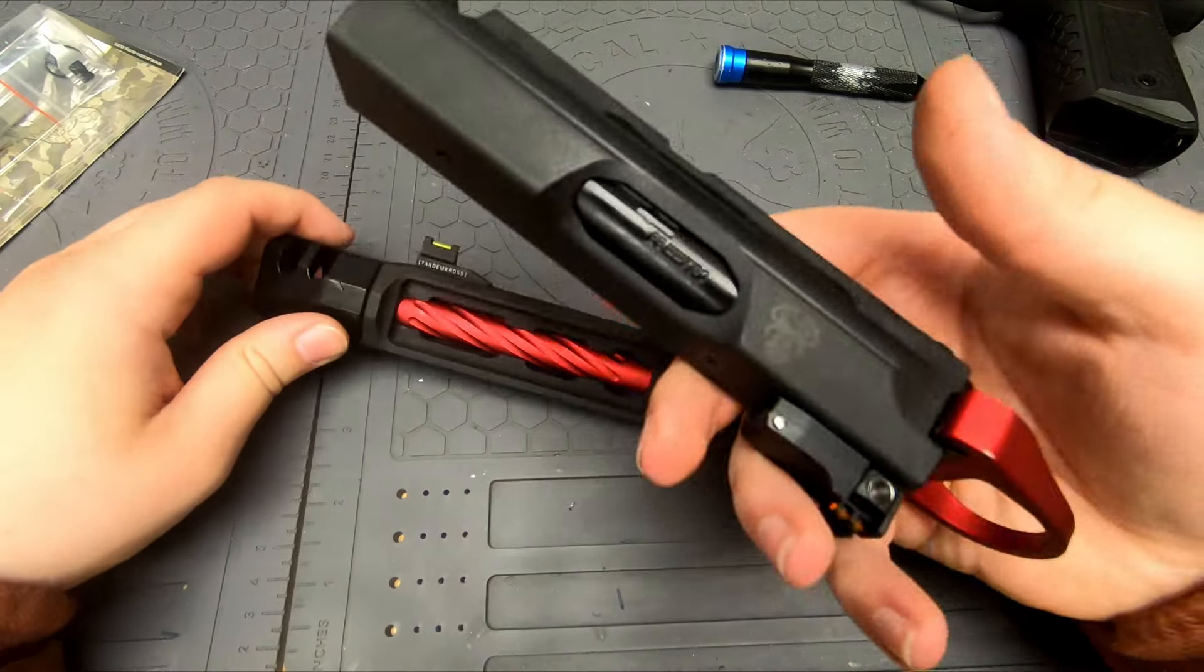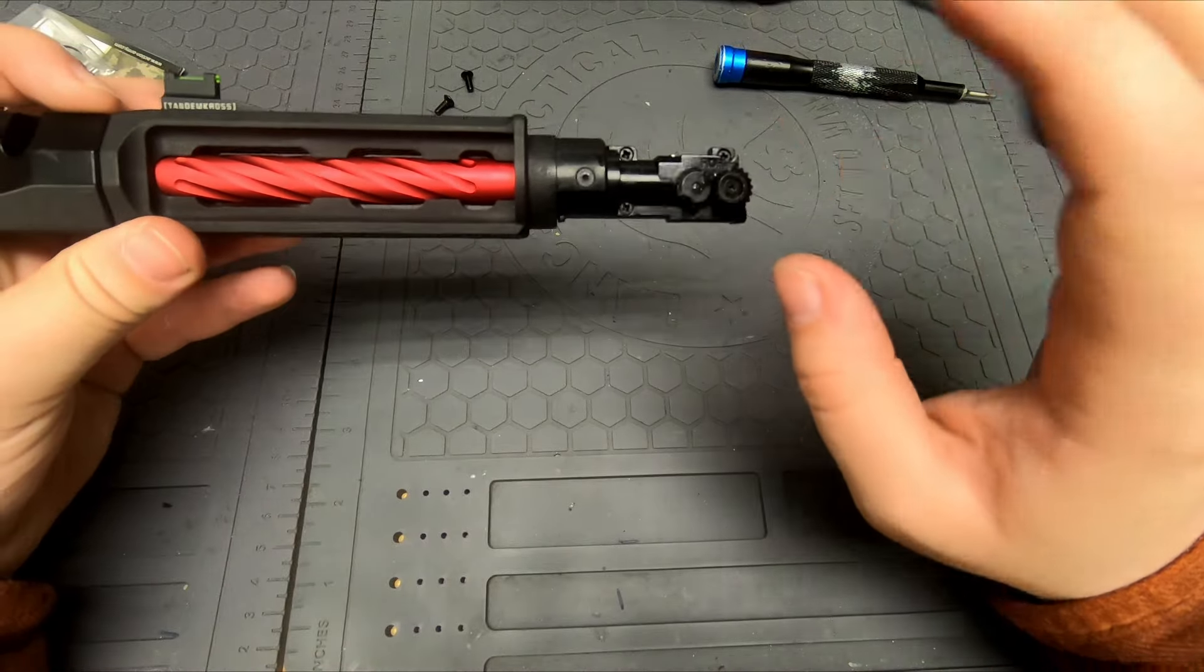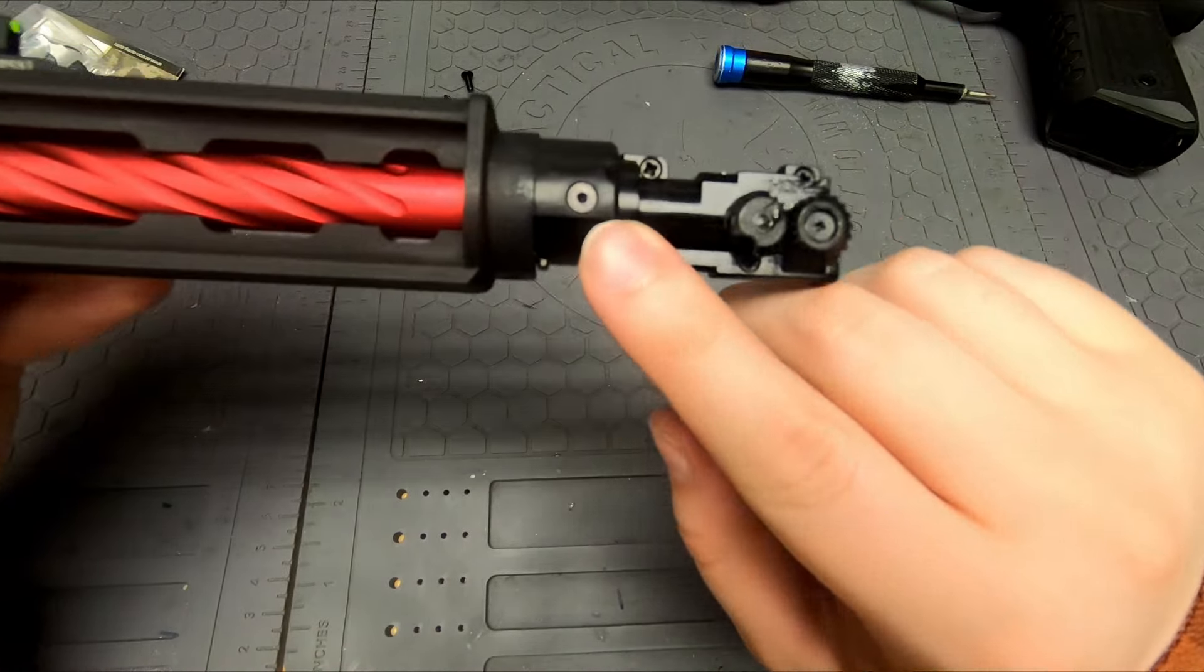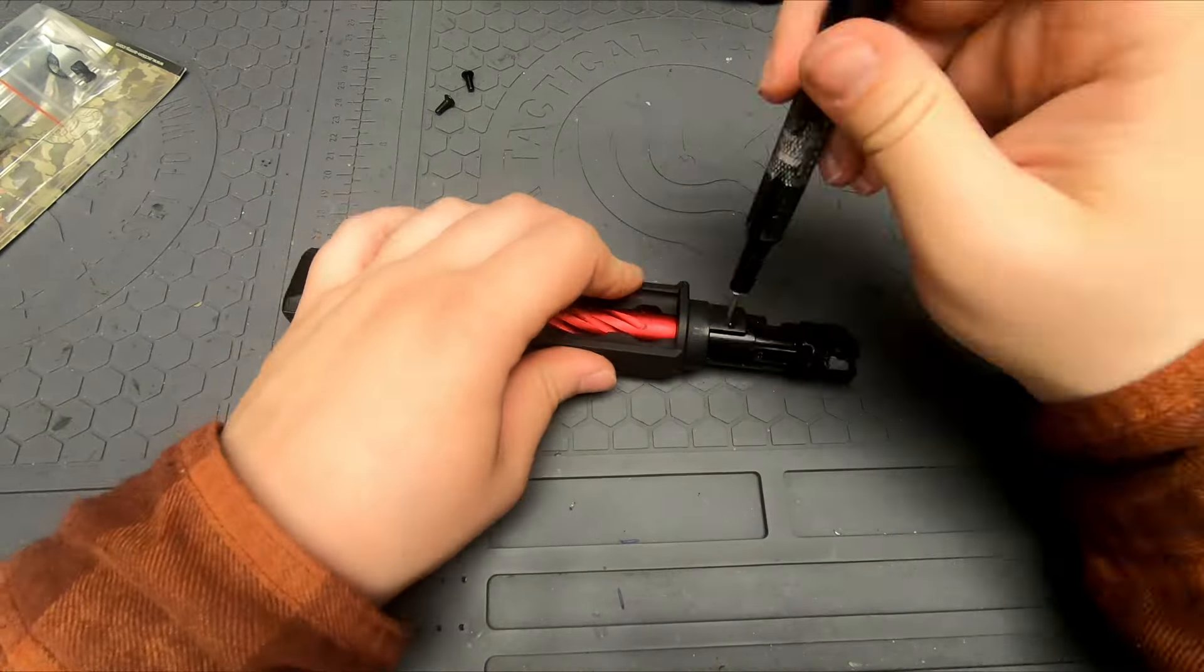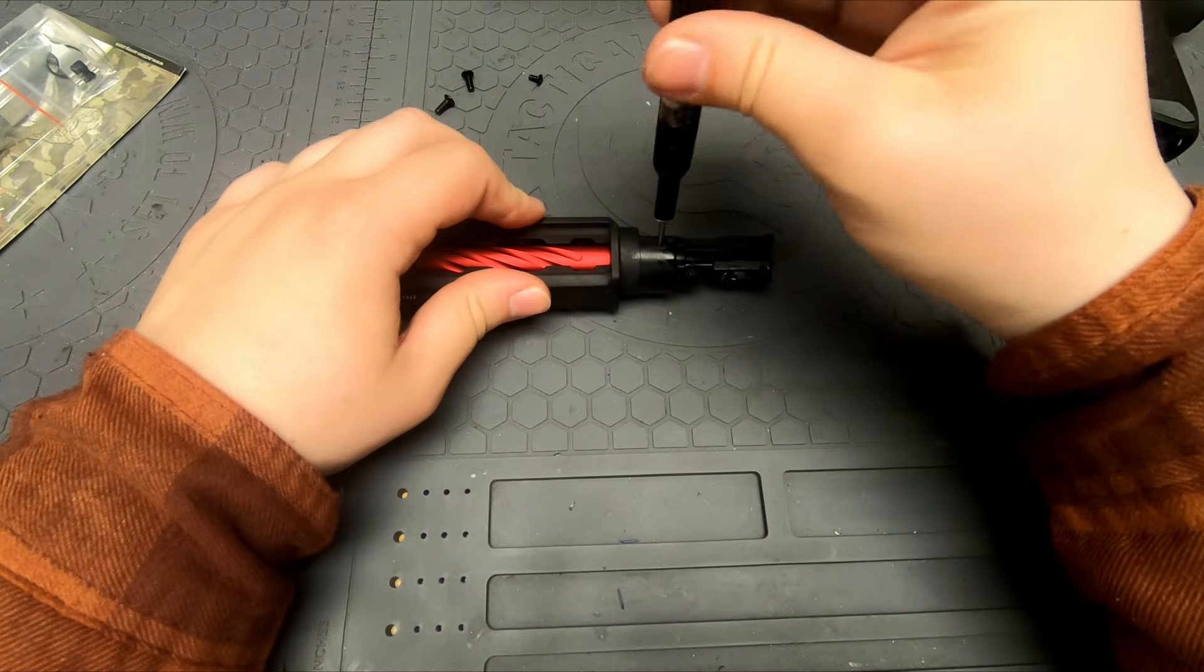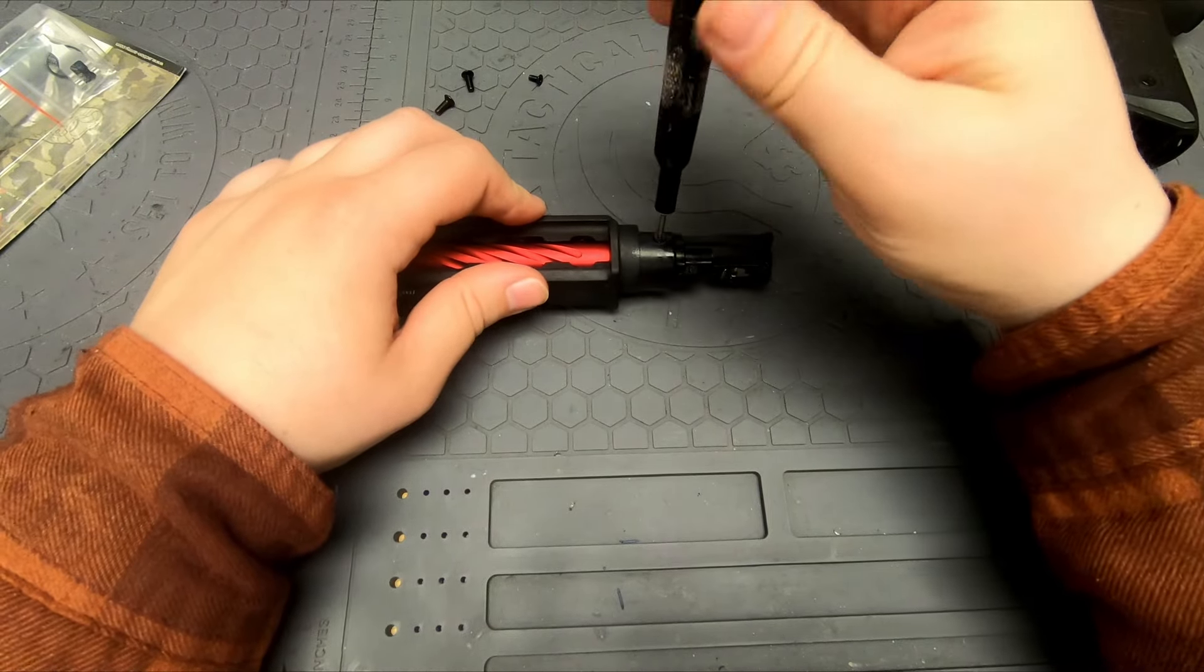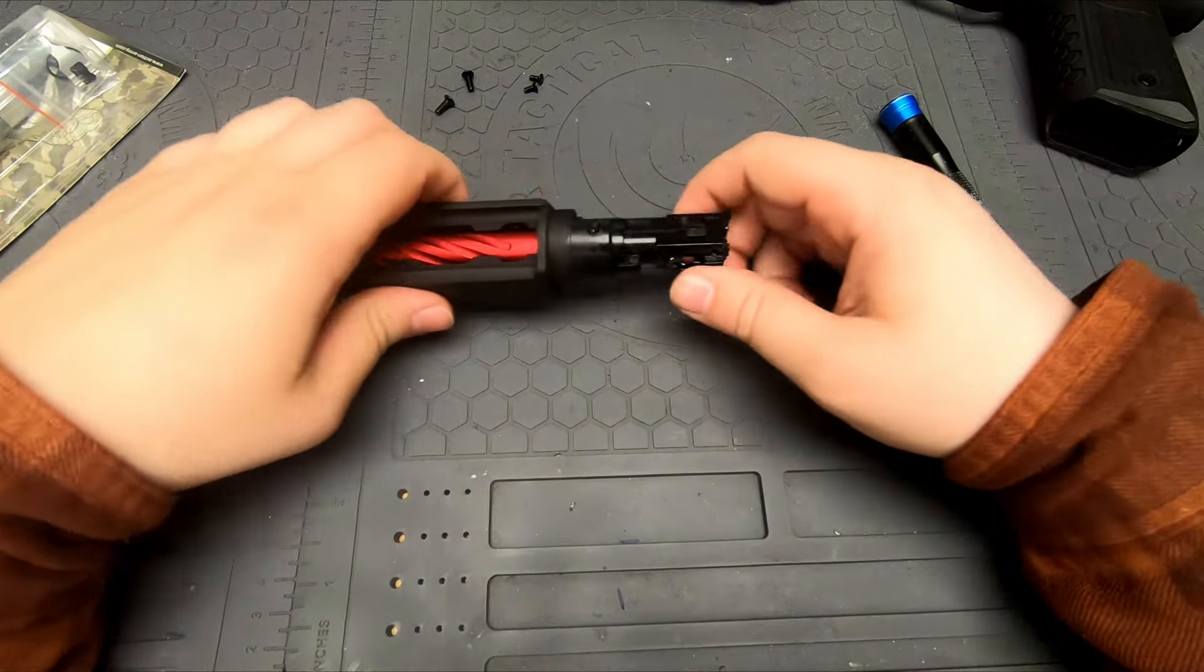Now I have the outer barrel separated from the receiver. To remove the hop-up chamber, it's these screws right here. Those two screws have been removed so we can now just pull this thing out.